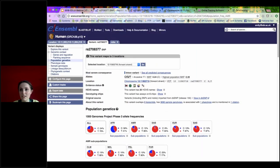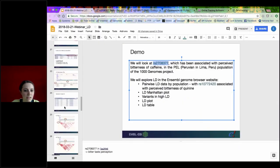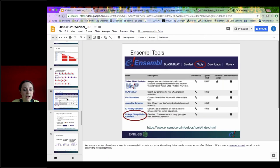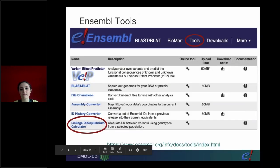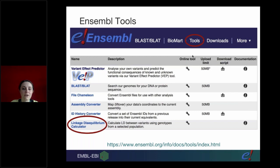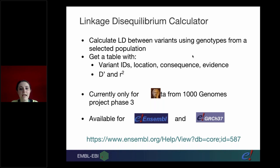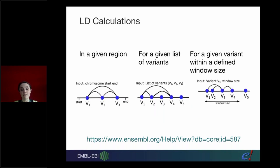So we've looked at the pages in Ensembl where you can view LD. We also have a tool - the linkage disequilibrium calculator. This is really useful if you've got a pair of variants. It allows you to calculate LD from selected populations, giving you a table with variant IDs, location, consequences, plus D' and R². It's currently only available for human data using 1000 Genomes Project Phase 3, and is available in both versions of the human genome assembly. It can calculate LD across a given region, for a list of variants giving pairwise LD, or starting from a single variant with a window size.